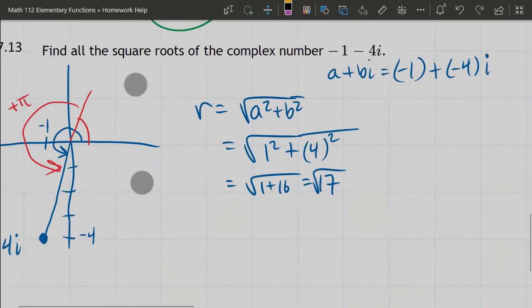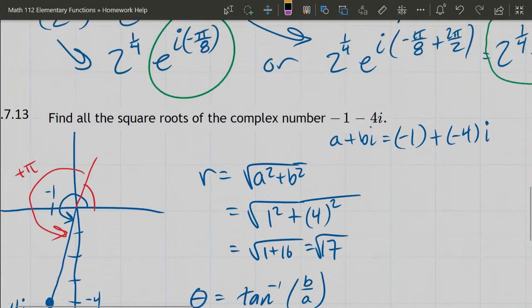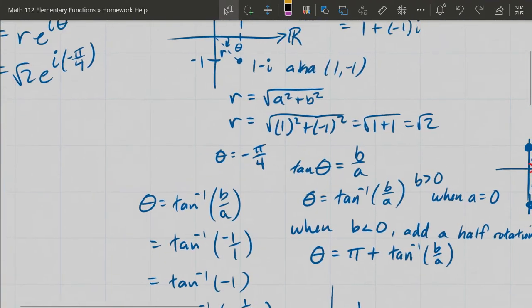All right, so that's our radius. Now we're going to go for the angle θ. This is tan⁻¹(y/x), or in these variables b/a.